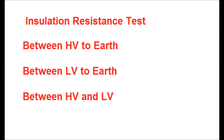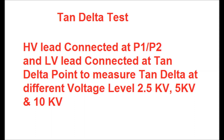If the tan delta point is available on the CT — normally for 33kV or below rated CTs, the tan delta point is not available, so tan delta test is not required. For 66kV and above, the tan delta point is normally available, so tan delta test is done before commissioning. The HV lead is connected at the primary side and the LV lead at the tan delta point, and the test is carried out at different voltage levels: 2.5kV, 5kV, and 10kV. The result is checked whether the tan delta is within 0.5% limit.